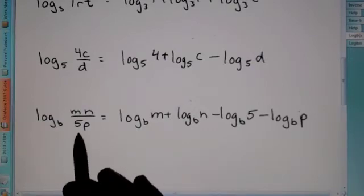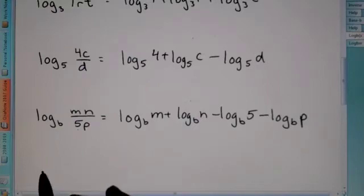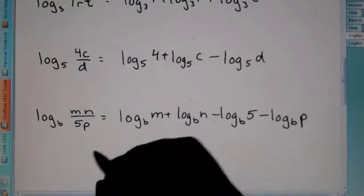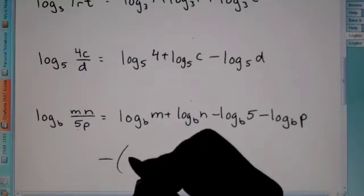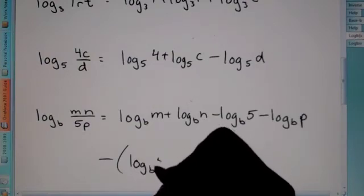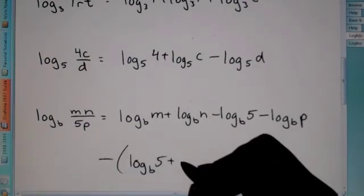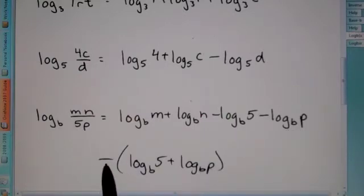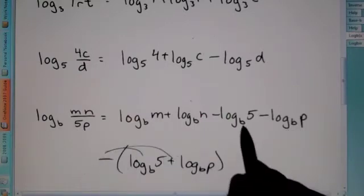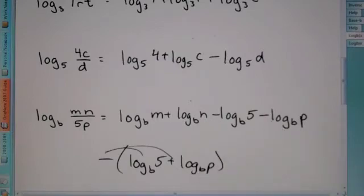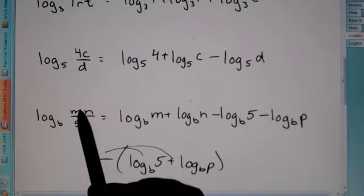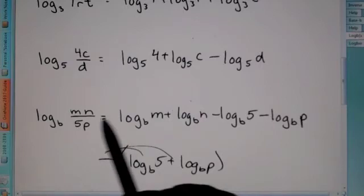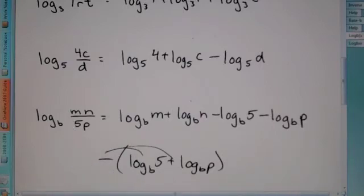Alright. So, now, even though p and 5 are being multiplied, they both get a negative. Because if you think about it, we're going to put the whole denominator in here. Log b 5. And then since it's multiplied, we put a plus. Log b p. But since it's a denominator, it's a minus. So, we just went ahead and distributed that negative. That's why they're both negative. So, the key thing to remember is anything in the numerator is a positive log. Anything in the denominator is a negative log.